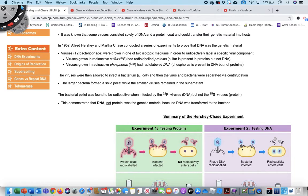So for experiment one, they were testing proteins. And what they did was they labeled the protein coat of the virus with sulfur-35 because sulfur is present in proteins but not DNA. And in experiment two, what they labeled was the interior, which was the DNA, and they labeled that with phosphorus-32 because phosphorus is present in DNA but not proteins.